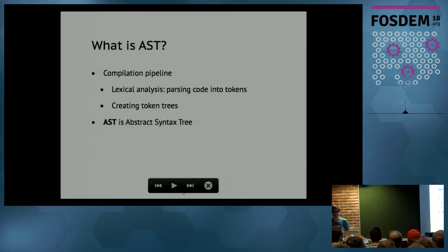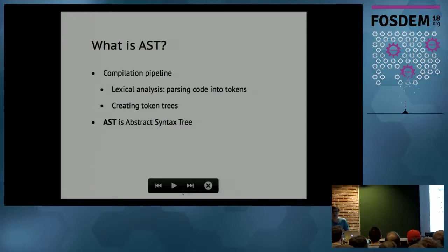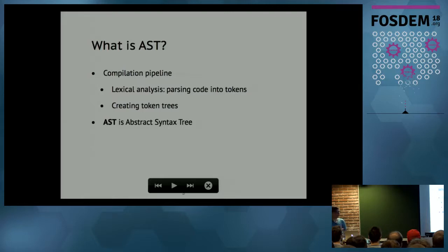A token is a very simple thing and can be thought of as a word. It can be a keyword, a string, a number — basically anything. A 'return' is a token, a 'fn' is a token. We put tokens into token trees, and out of those token trees we create a data structure called an abstract syntax tree, or AST for short.